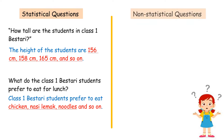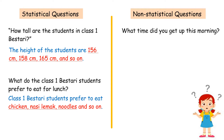A non-statistical question is one whose answer doesn't have variability. For example, what time did you get up this morning? The answer is: I woke up at 7 a.m. this morning — an exact time, with no variability.